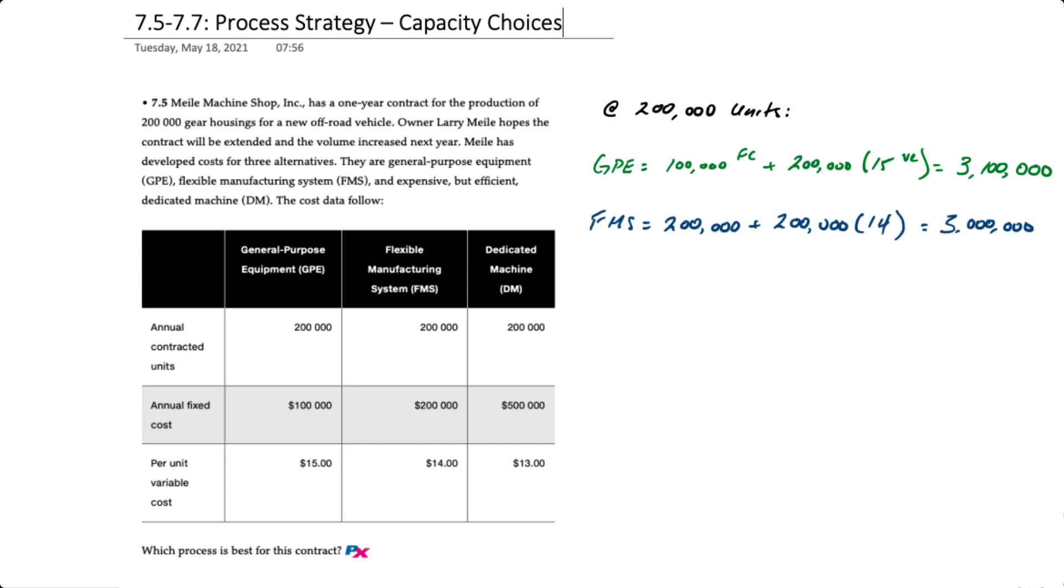For the flexible manufacturing system or FMS we take $200,000 in fixed costs plus the 200,000 produced times $14 per unit, that equals $3 million.